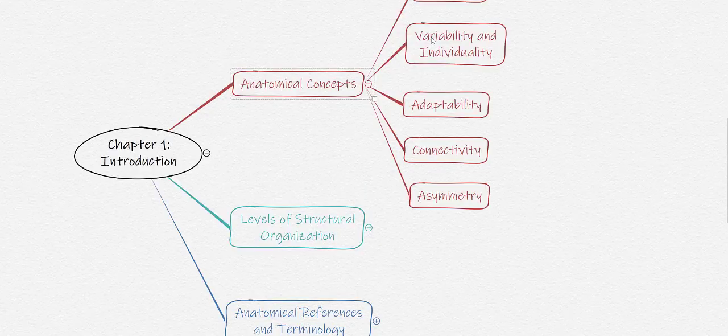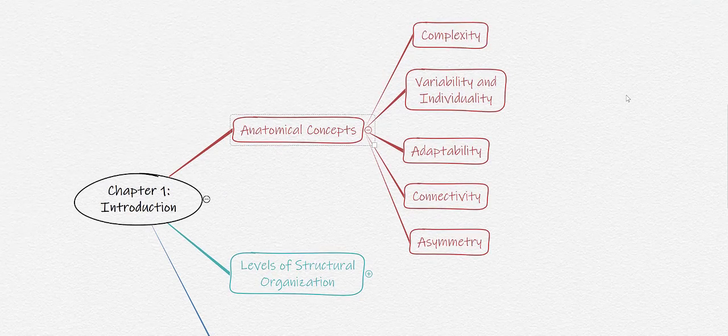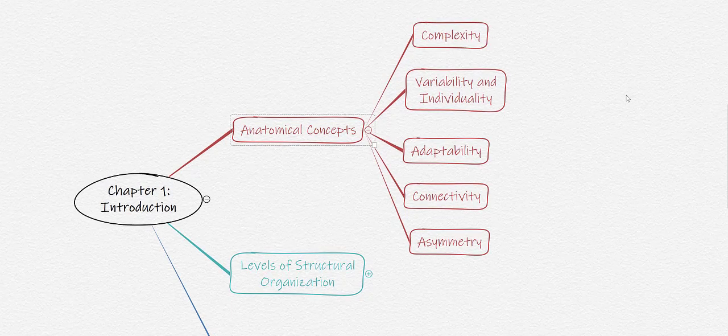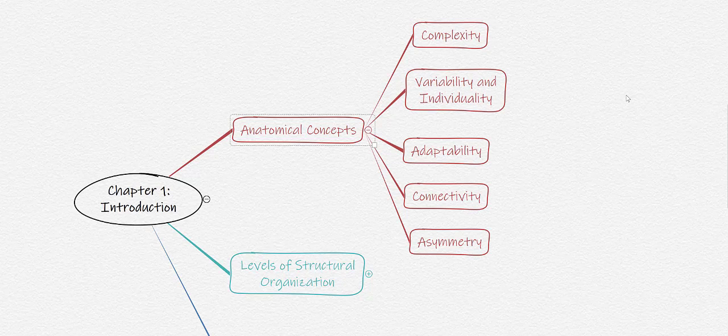The anatomical concepts that we will cover include complexity, variability and individuality, adaptability, connectivity, and asymmetry.